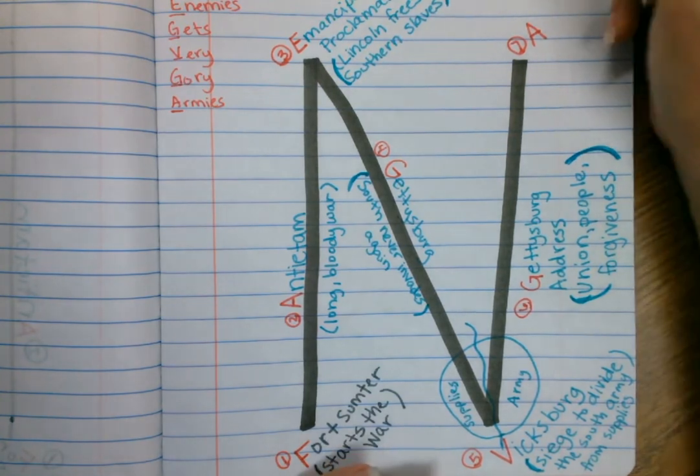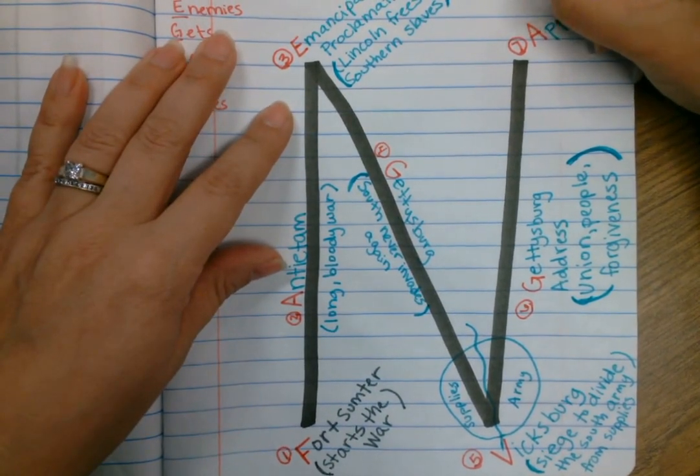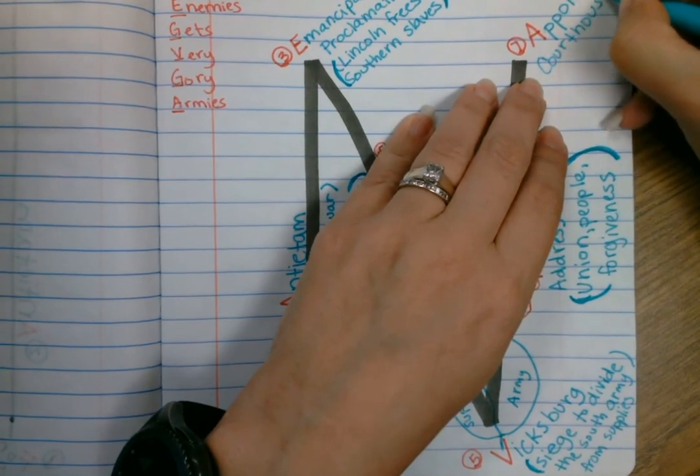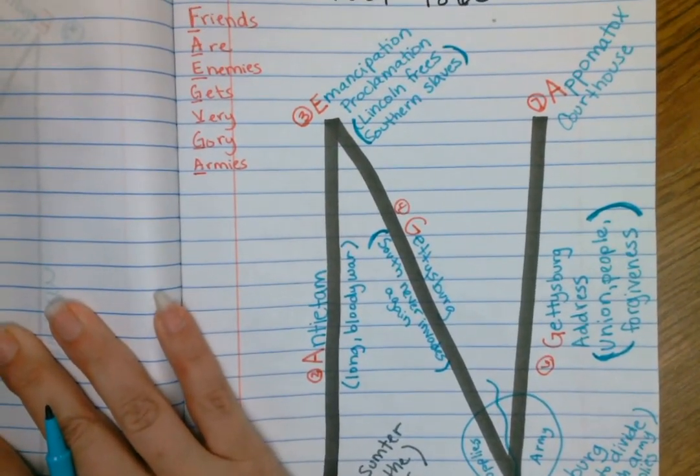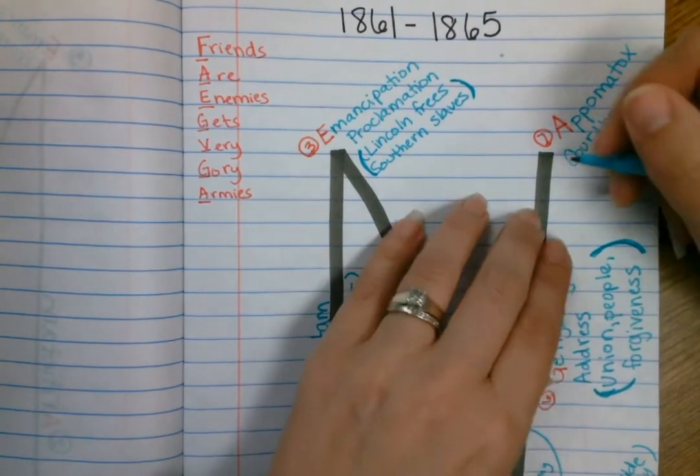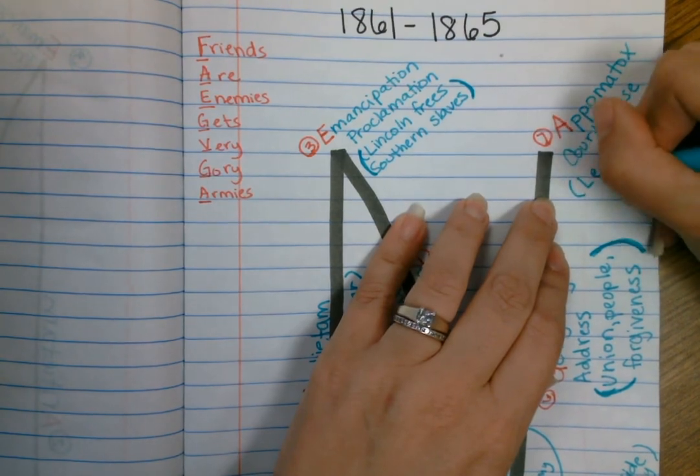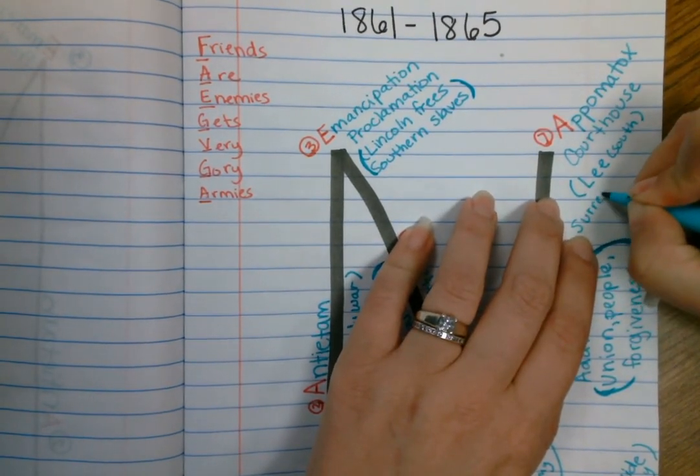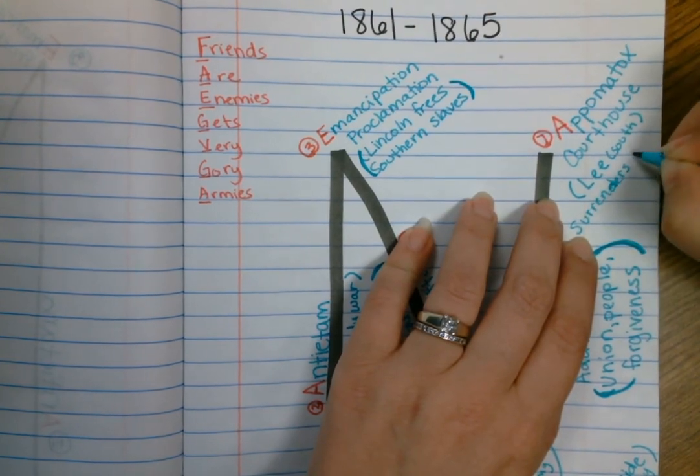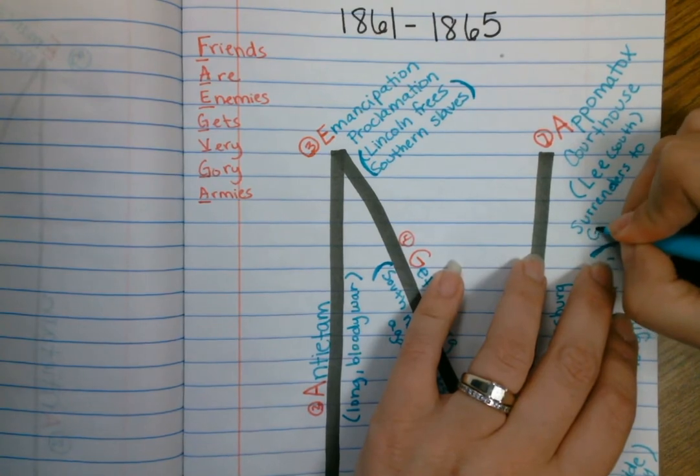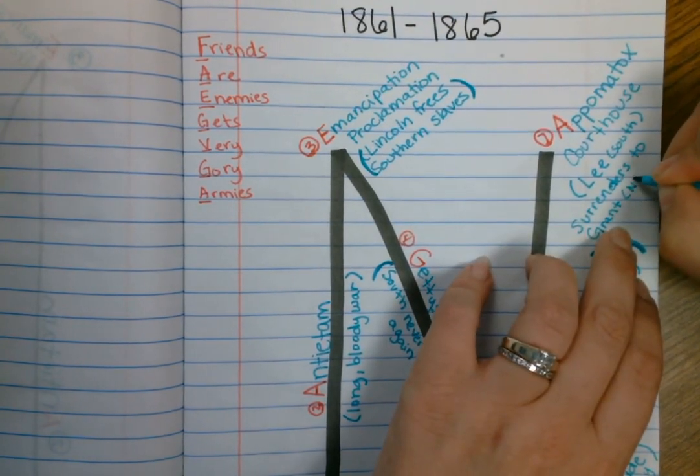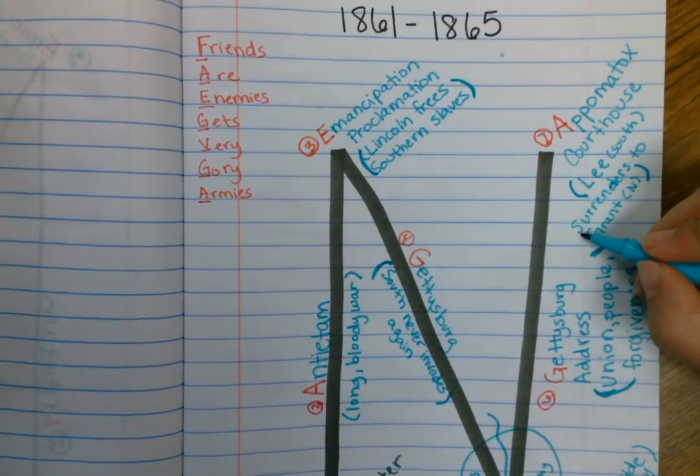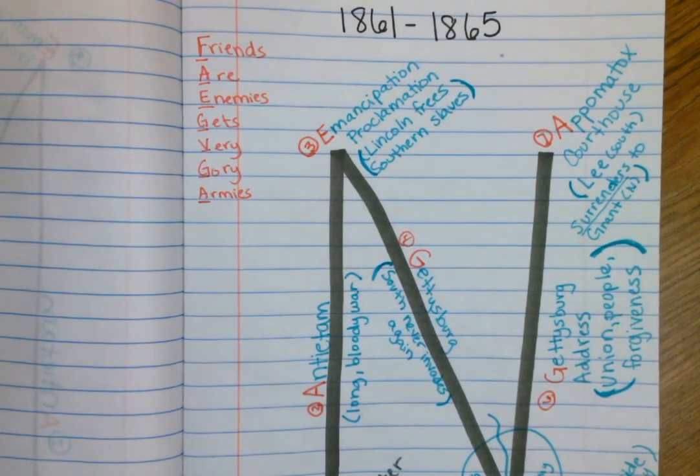So where does the war end? It's going to end in 1865 at Appomattox Courthouse in Virginia. Appomattox Courthouse right there, Appomattox Courthouse in Virginia, where Robert E. Lee, who's from the South, surrenders to Ulysses S. Grant. So he's going to surrender to Grant, or the North. And that is going to officially end the war in 1865.